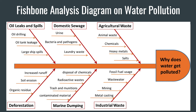There are six contributing factors to water pollution: oil leaks and spills, domestic sewage and aquaculture waste, deforestation, marine dumping, and industrial waste. In this slide, I'm only going to talk about the bottom three, which are deforestation, marine dumping, and industrial waste. For the top three, I will talk about those later in the video.